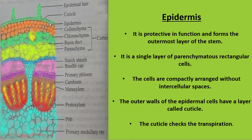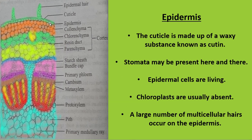The outer wall of the epidermis cells has a single layer called the cuticle, which helps to limit the transpiration rate. Transpiration is the process of loss of excess water from the plant body. The cuticle is made up of a waxy substance called cutin, and the epidermis layer is interrupted here and there due to the presence of stomata.